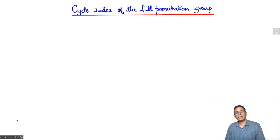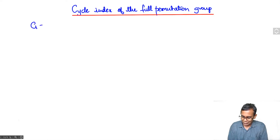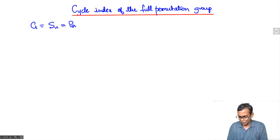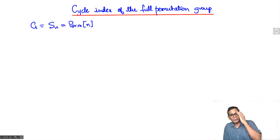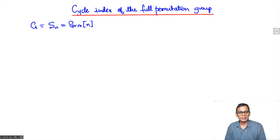In this lecture, we will take a quick look at the cycle index of the full permutation group. We take G to be S_N, which we regard as a permutation group of the set 1 to N — that is, all the permutations of the set 1 to N. In order to do this, we need to compute how many permutations there are with a given cycle decomposition.